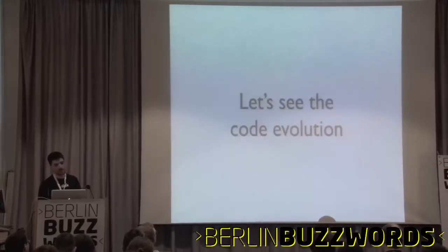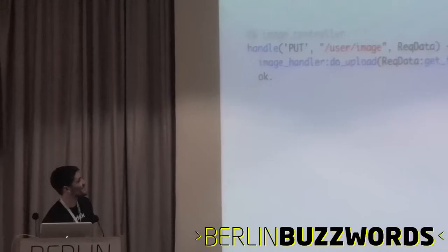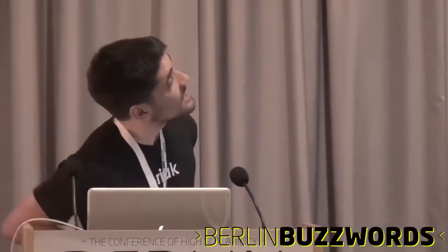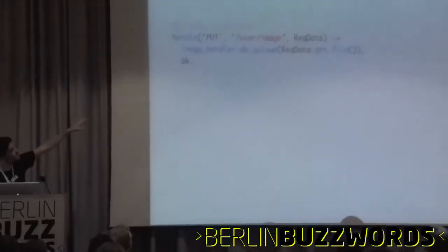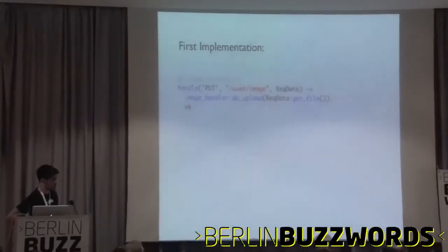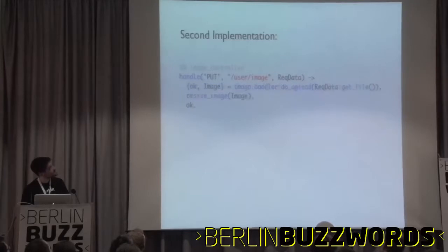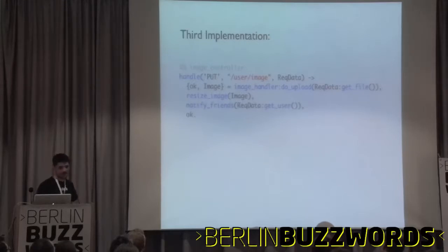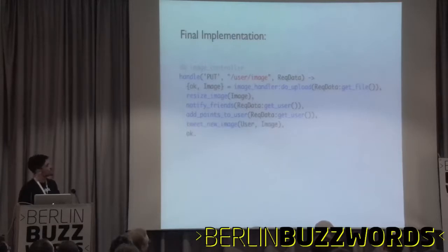So let's see what happened with the code. This was our first implementation — here I'm using Erlang as pseudocode, which is pretty readable. We have a PUT request to a path, which is user image, with some request data. Whenever we got that, what we used to do was handle the upload and on the request data we got the file. Then we resize the image because the sysadmin asked, we notify the friends because the product owner wanted that, we add points to the user for the social media guru, and also tweet that there is a new image.